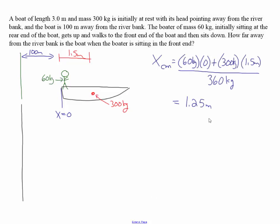The x coordinate of the center of mass initially is 60 kilograms times zero plus 300 kilograms times 1.5, divided by the total mass of 360 kilograms, which equals 1.25 meters. The center of mass of the system is between the man and the center of the boat at x equals 1.25 meters — 0.25 meters to the left of the center of the boat.